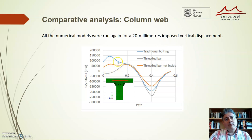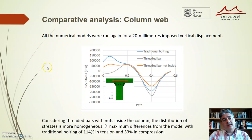The peak of maximum stress in the tension zone disappears when using threaded bars. In the case of threaded bars with nuts inside the column, the distribution of tension stresses is more homogenous in the tension zone of the panel, with a maximum difference from the model with traditional bolting above 100%.